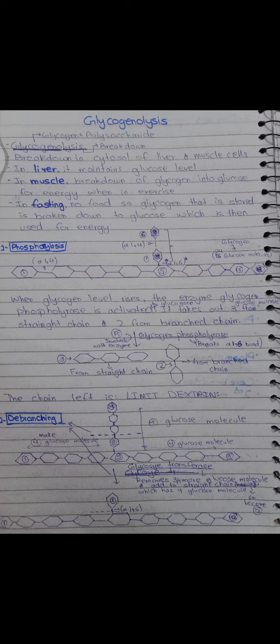The next step is debranching, done by glycogen transferase (the debranching enzyme). It removes two or three more glucose molecules from the branch and adds them to the straight chain. In our example, the branching chain had four glucose units; glycogen transferase moves three of those four glucose molecules into the straight chain. Now only one glucose molecule remains attached at the branch point.